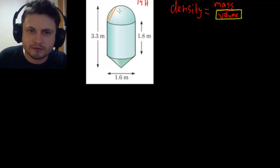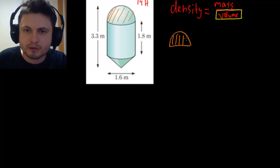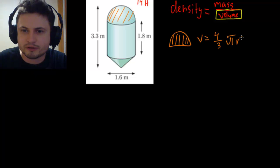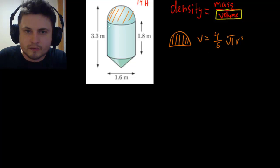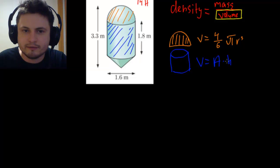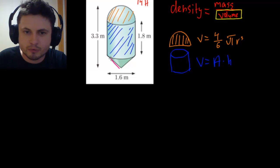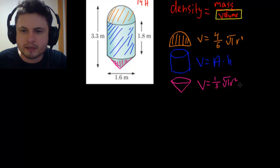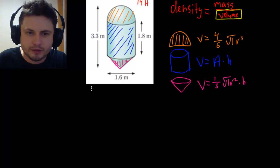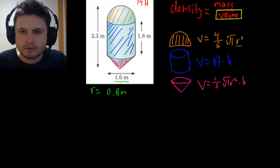The silo is made up of three shapes. At the top is a semi-sphere (orange), whose volume is four-thirds pi r cubed divided by two, giving a divisor of six. In the middle is a cylinder (volume = area × height). At the bottom is a cone (volume = one-third pi r squared times height). The radius is half the diameter: 0.8 meters.